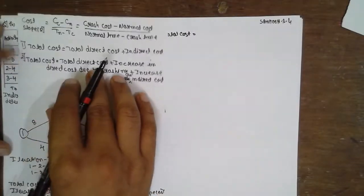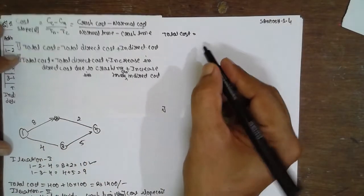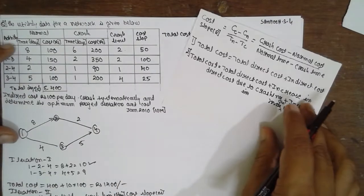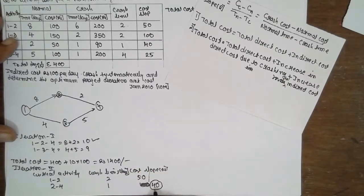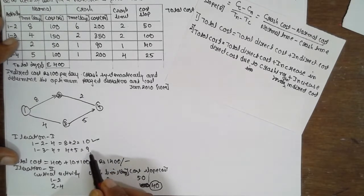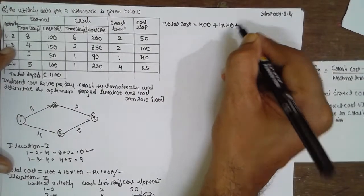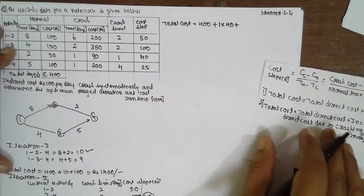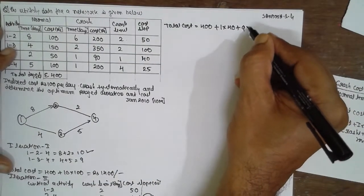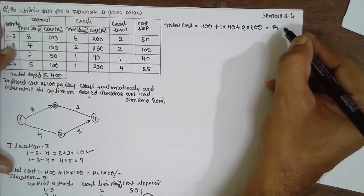The formula for total cost is: total direct cost plus increase in direct cost due to crushing plus indirect cost. Direct cost is 400. We can crush by 1 only, because 10 minus 9 is 1. So: 400 plus 1 into 40, plus 9 into 100. The answer is rupees 1340.